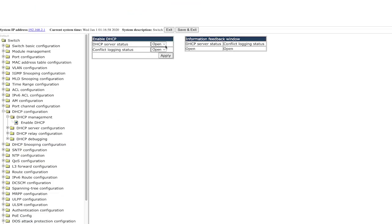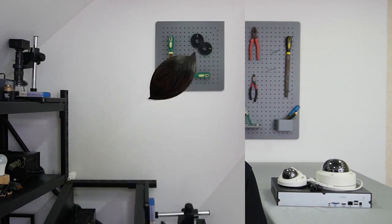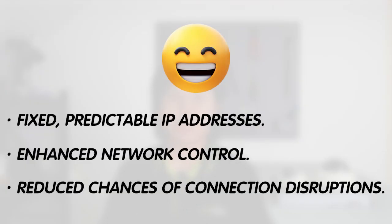Using a Static IP means you need to manually configure each device with its unique address. This approach is excellent for devices that should always be found at the same place on your network. Since Static IPs provide fixed and predictable addresses, they ensure that devices like NVRs have a constant location on the network, enhancing control and making it easier to manage and troubleshoot devices.